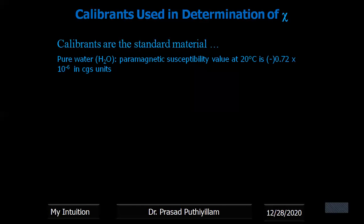You can take pure water as an example. Its paramagnetic susceptibility value at 20 degrees Celsius is -0.72 × 10⁻⁶ in CGS units. But temperature affects a small variation. A 10 degree Celsius variation of temperature will affect its value. Therefore, it cannot be used as such, it is not used.